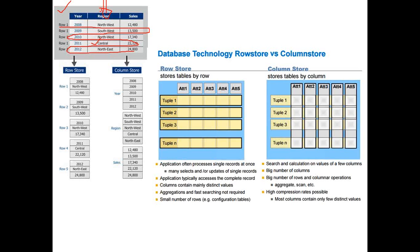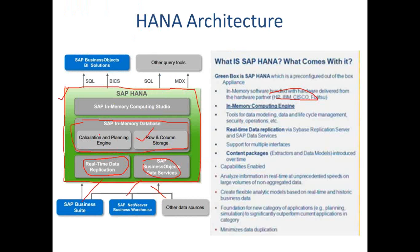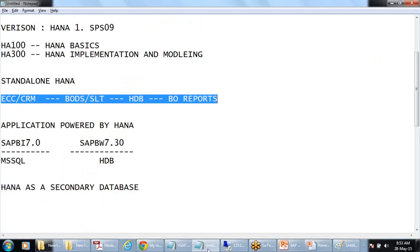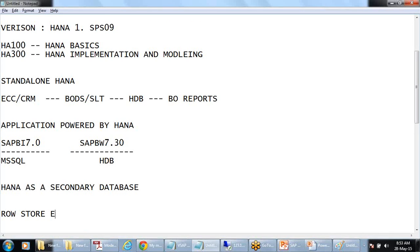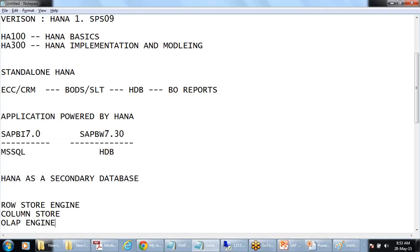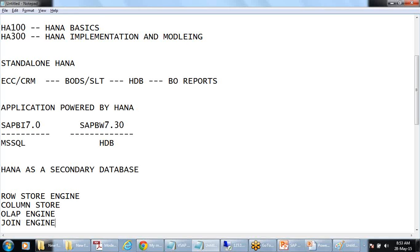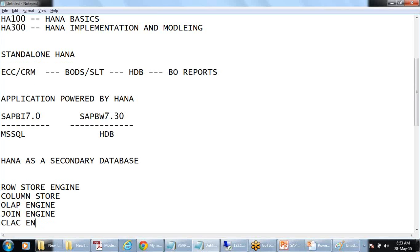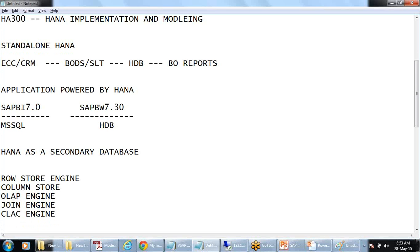With column store, HANA reads only the columns that are required — not unnecessary data — which is why it is faster. In the SAP HANA database there are multiple engines to process data: a row store engine, a column store engine, an OLAP engine, a join engine, and a calculation engine. All these engines help HANA database process data faster.